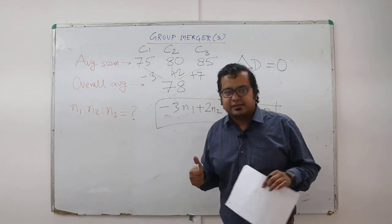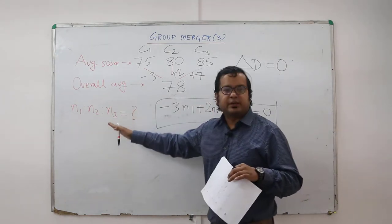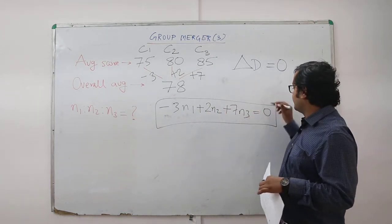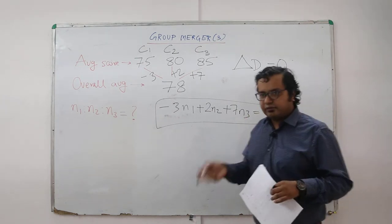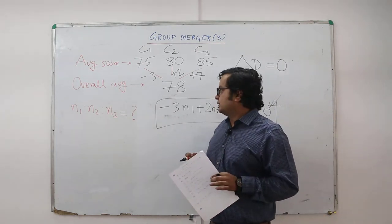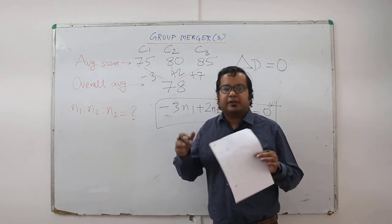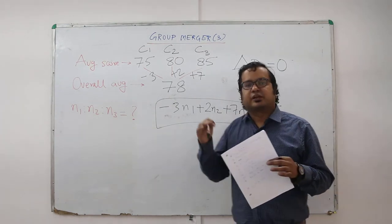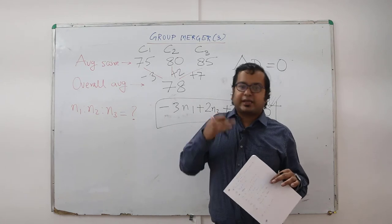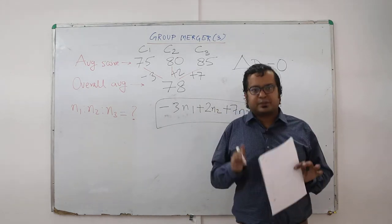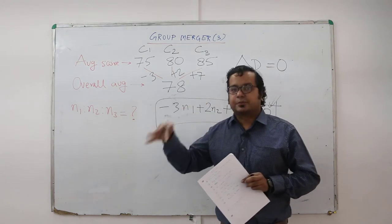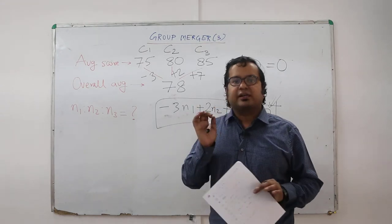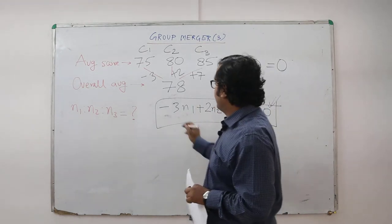One way of solving such questions is to look at the options — put the values of n1, n2, n3 into the equation and see which option gives zero. The other way, if you don't have options, is hit and trial. You will never get a unique solution; there can be infinite solutions. Any n1, n2, n3 group satisfying the equation is a valid answer.